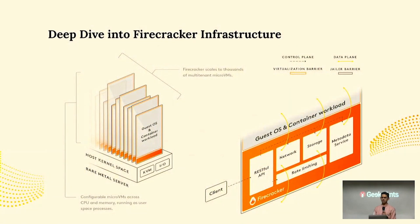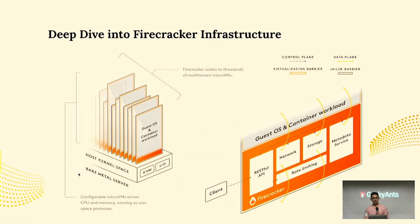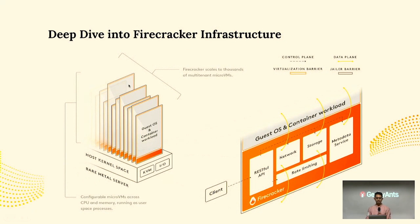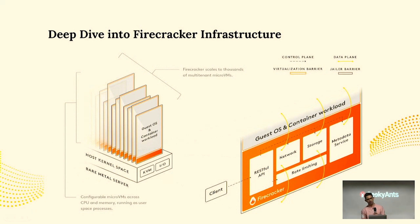Let's deep dive into what the Firecracker infrastructure looks like — this image is taken directly from the AWS docs. There is a bare metal server as the underlying node, on which sits KVM, and on top of that in the user space we have multi-tenant micro VMs. We can boot hundreds and thousands of multi-tenant micro VMs on a single node, similar to containers.